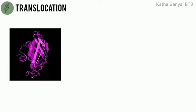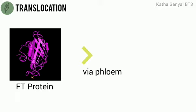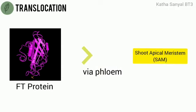The FT protein resulting from the short period of CO transcription factor activity is then transported via the phloem to the shoot apical meristem.